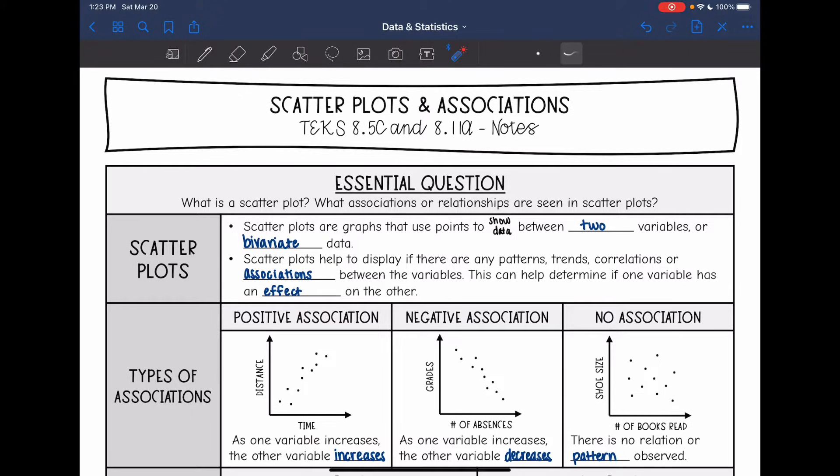They help to display if there are any patterns, trends, correlations, or associations between the variables. This can help determine if one variable has an effect on another. So what we're going to look at today is scatterplots and we're going to determine associations between them.